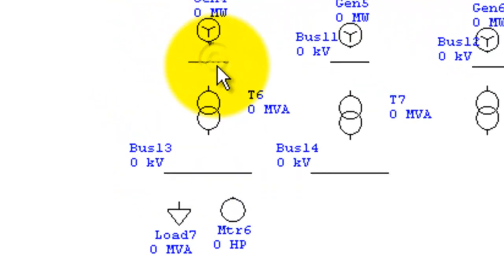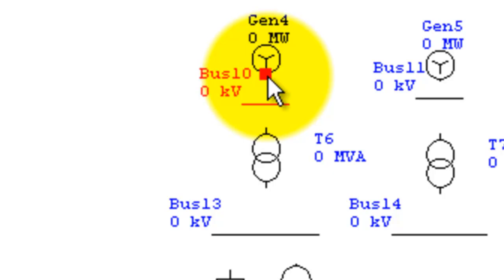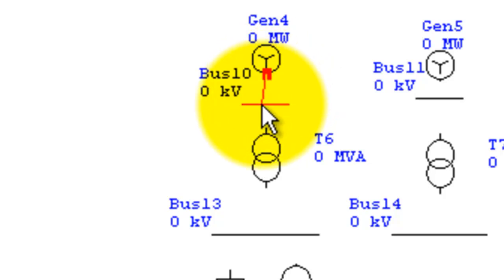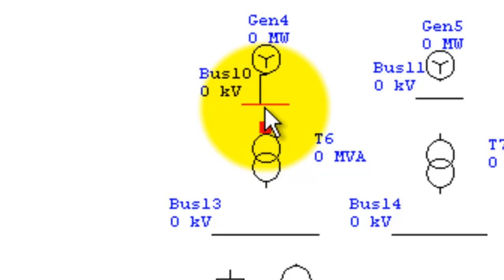Take your mouse over the generator symbol and you will see a pink square box appearing. When that pink box appears, just click and drag it towards the bus. You will see the bus goes pink when you come over it — then release the mouse and it will connect the generator to the bus. Do the same with all other components.